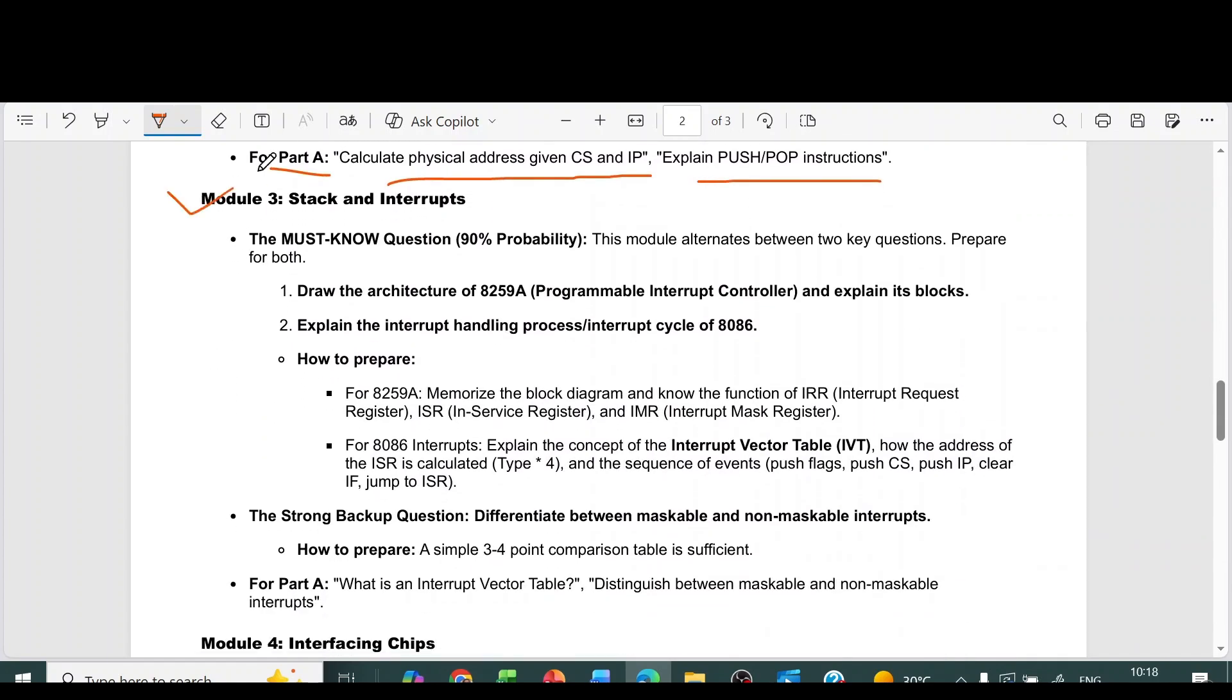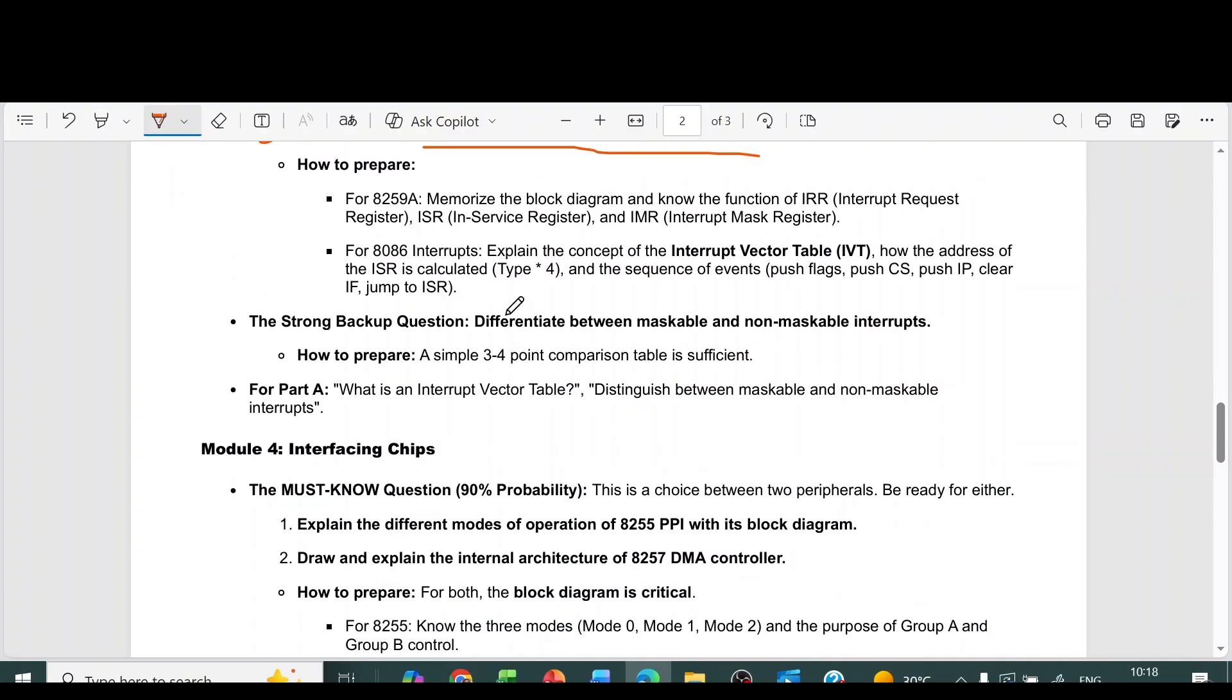Module 3, stack and interrupts. The first question is draw the architecture of 8259A and explain its blocks. Second, explain the interrupt handling process or interrupt cycle of 8086. Third question is differentiate between maskable and non-maskable interrupts. Part A questions are what is an interrupt vector table, distinguish between maskable and non-maskable interrupts.